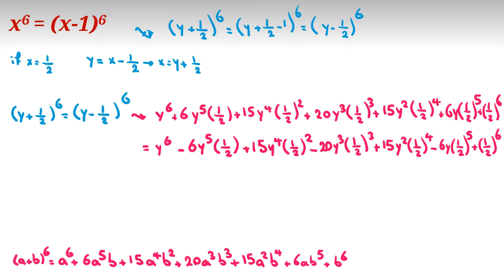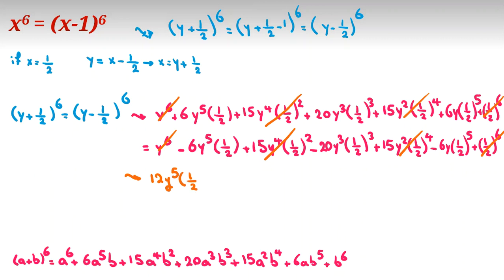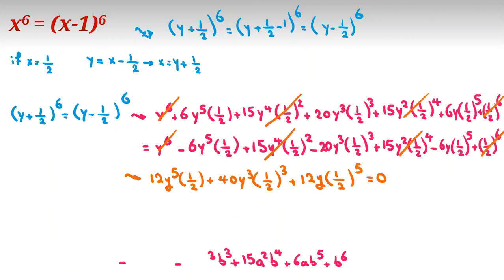Now we simplify by canceling terms that appear with the same sign on both sides. The even-power terms cancel. Moving the remaining terms to the left hand side gives: 12y⁵·(1/2) plus 40y³·(1/2)³ plus 12y·(1/2)⁵ equal to zero.